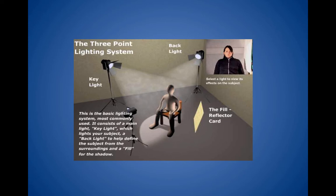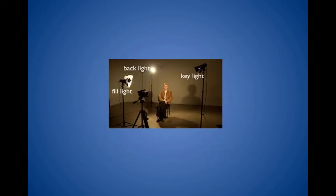Here's an example of someone set up for an interview. We have a high key light, a slightly lower fill light, and the backlight is positioned highest because we want that rim light on the head separating it from the background.